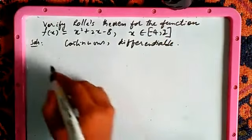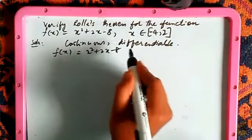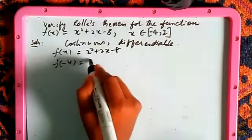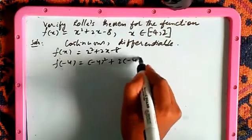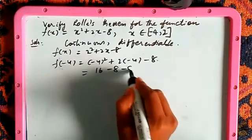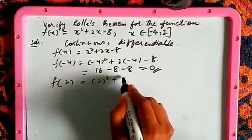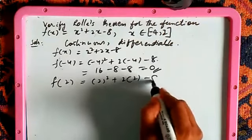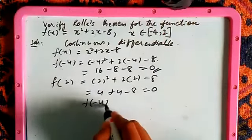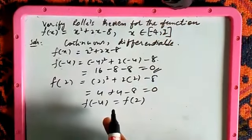Now substitute the interval values. f(-4) = (-4)² + 2(-4) - 8 = 16 - 8 - 8 = 0. And f(2) = 2² + 2(2) - 8 = 4 + 4 - 8 = 0. From this you can conclude that f(-4) = f(2), which satisfies the next condition for Rolle's theorem.